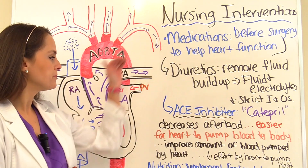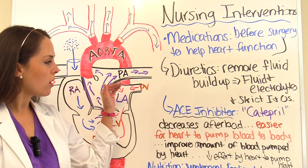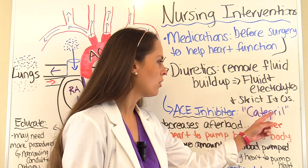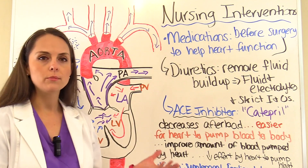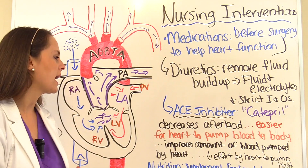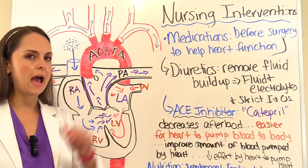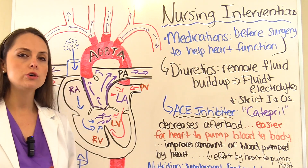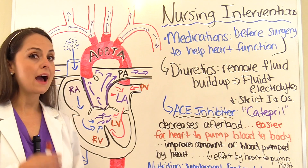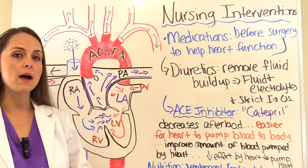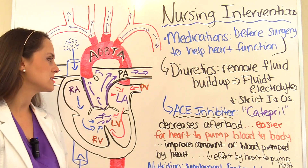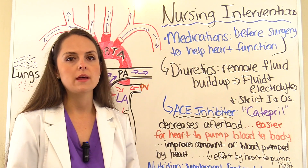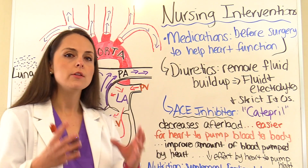ACE inhibitors are also used — for example, captopril. Many ACE inhibitors end in '-pril,' which can help you identify them on exams. These medications decrease afterload, making it easier for the heart to pump blood to the body. This improves cardiac output and decreases the effort the heart must exert. These medications may be used before surgery and for a short time after surgery to help heart function.